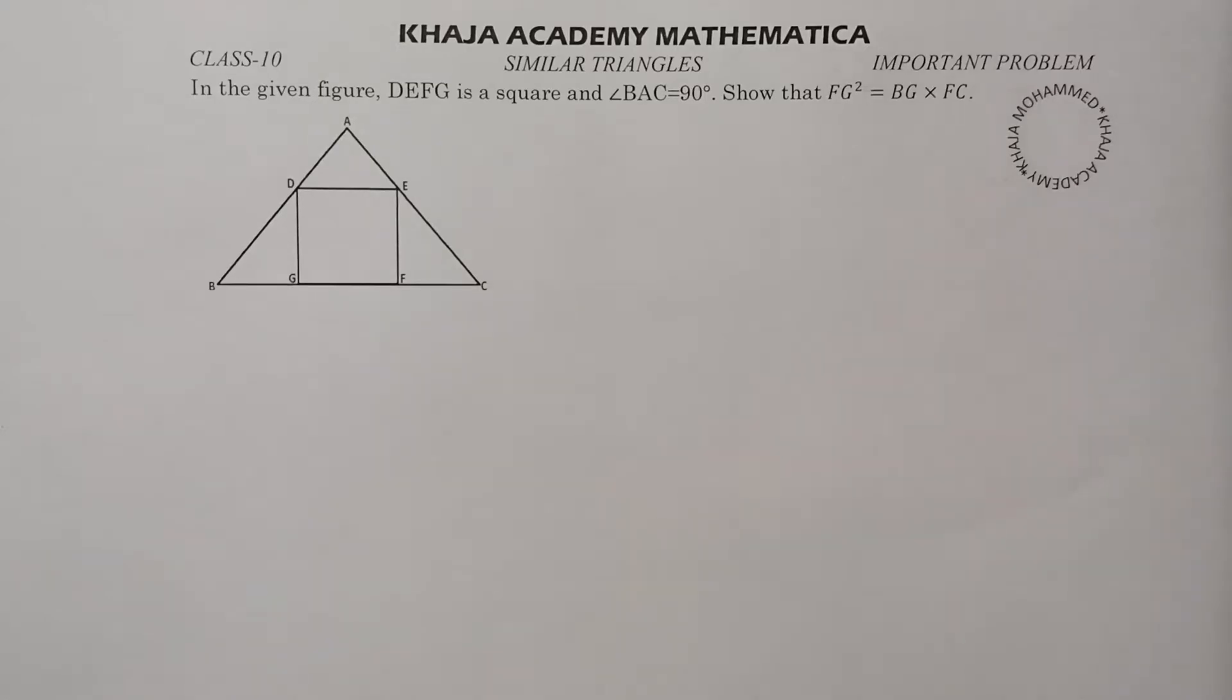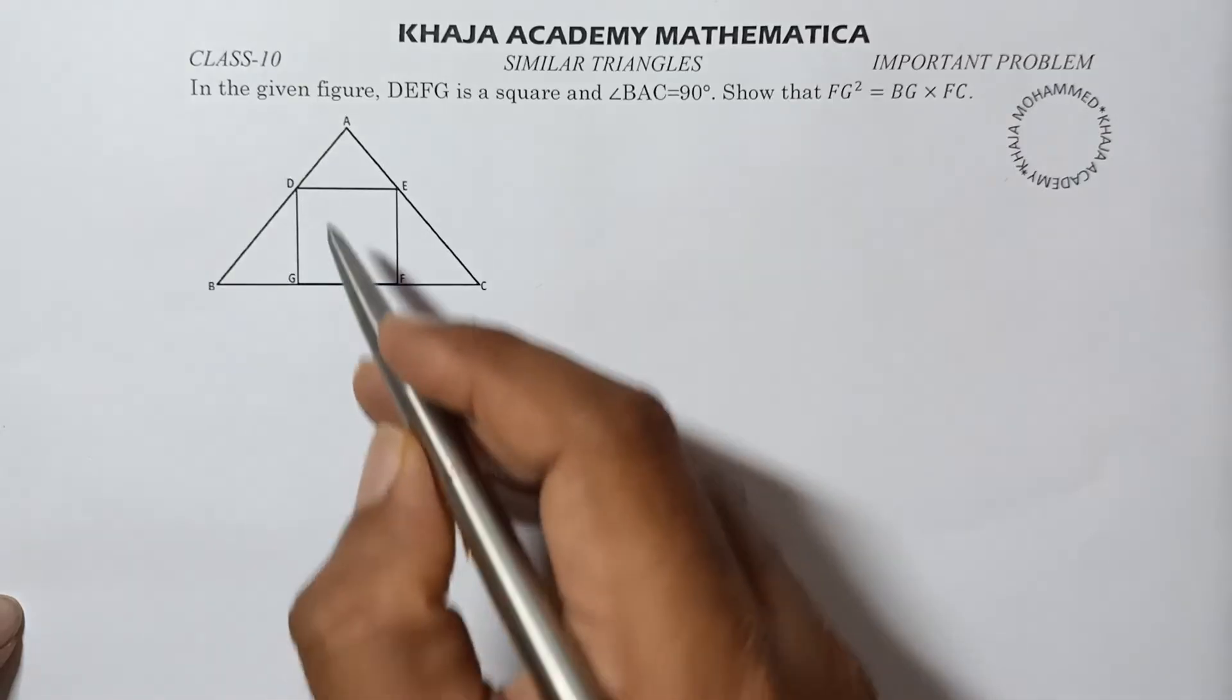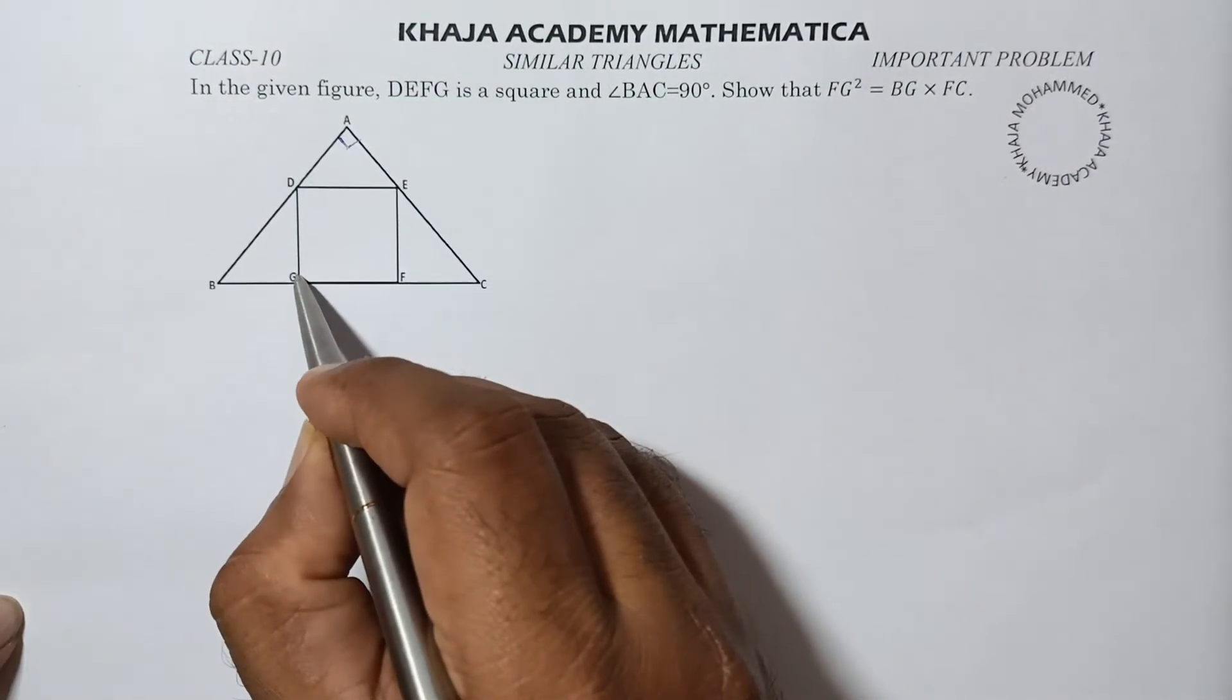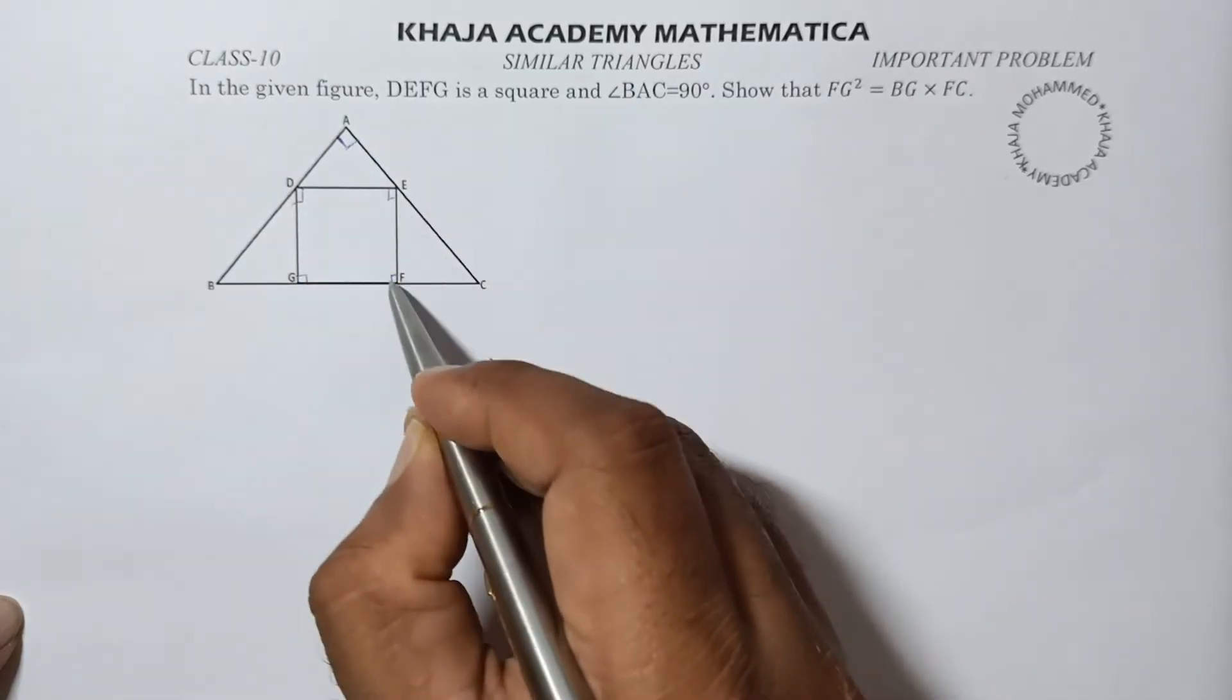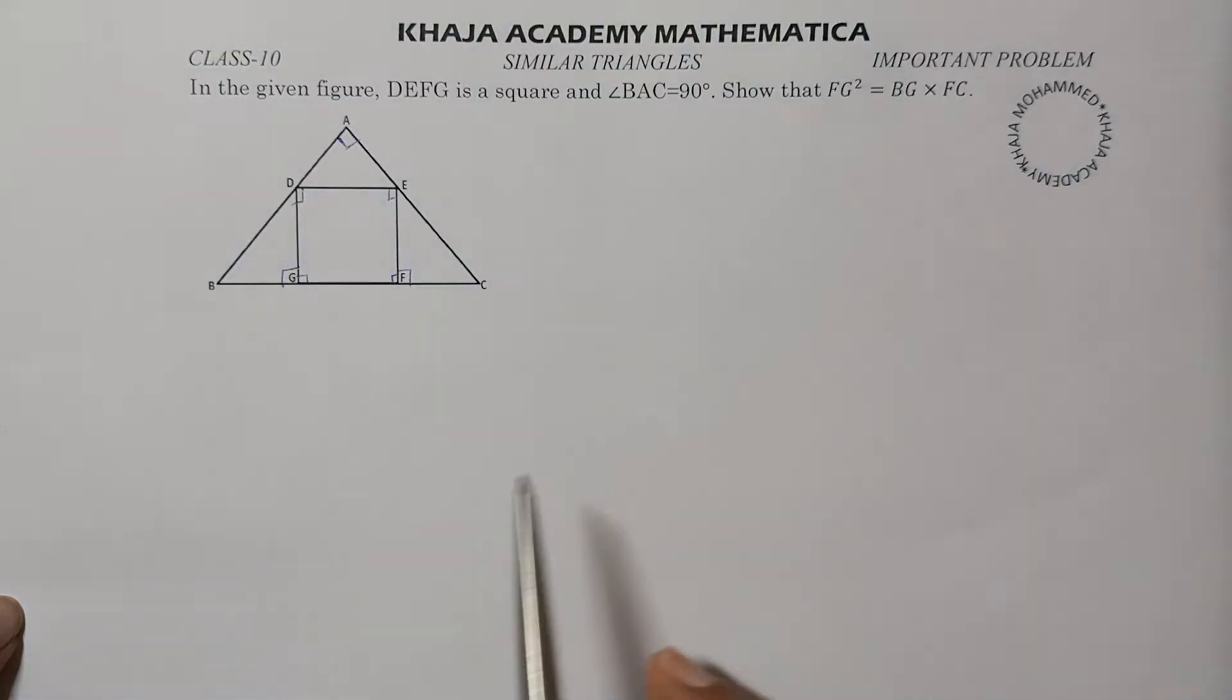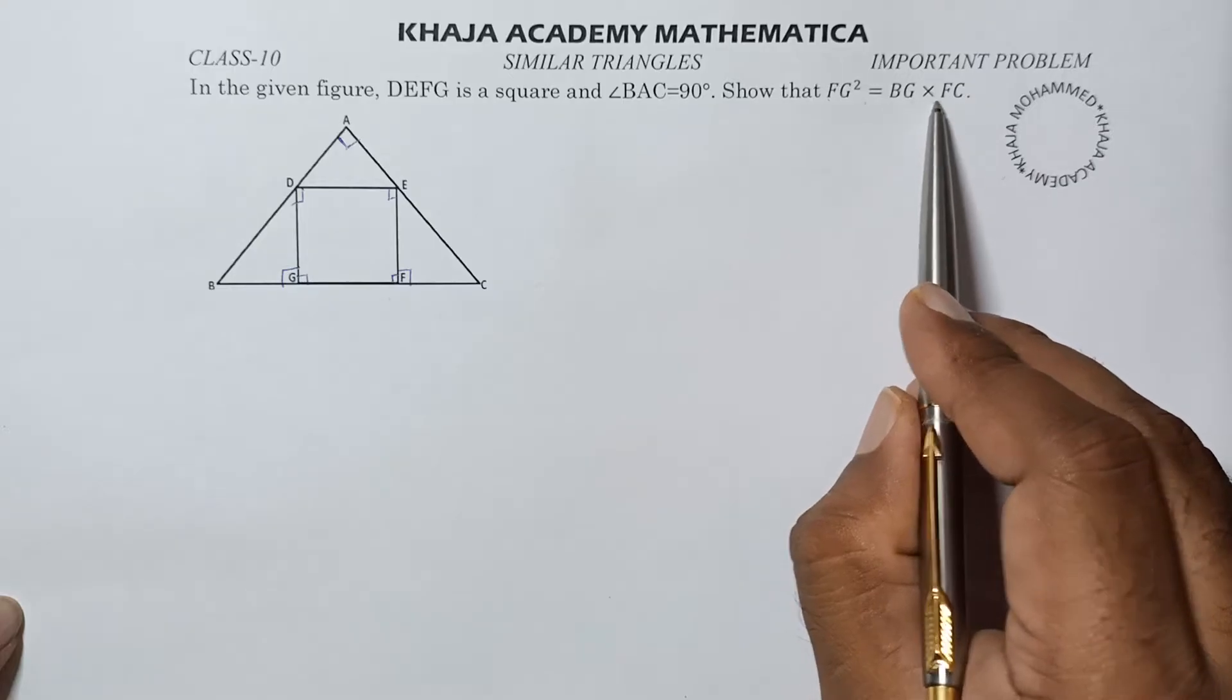In the given figure, DEFG is a square and angle BAC is 90 degrees. Since angle BAC is 90 and DEFG is a square, all angles in the square are also 90 degrees. We need to prove that FG square equals BG into FC.